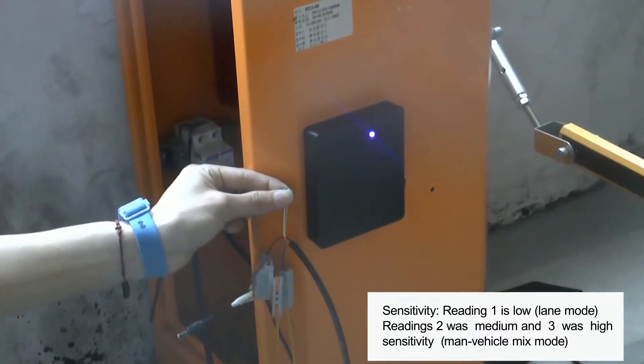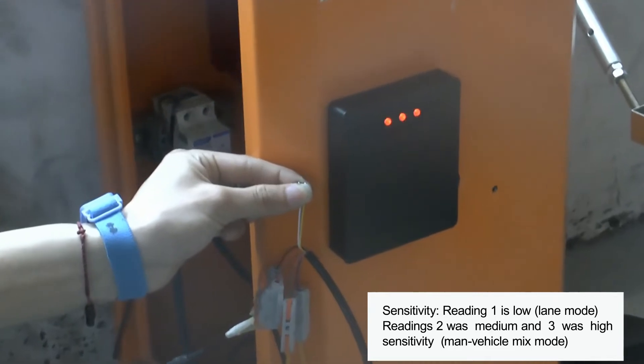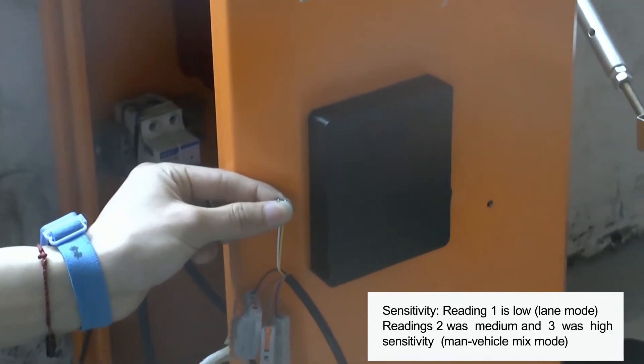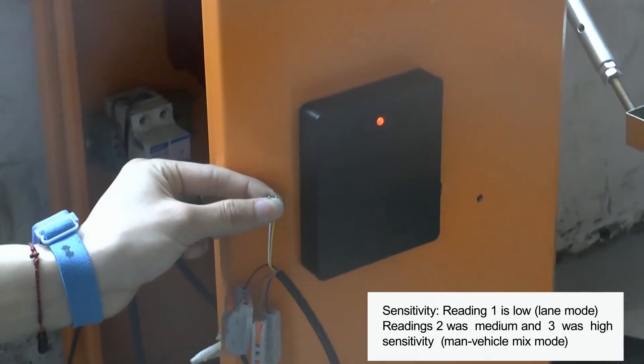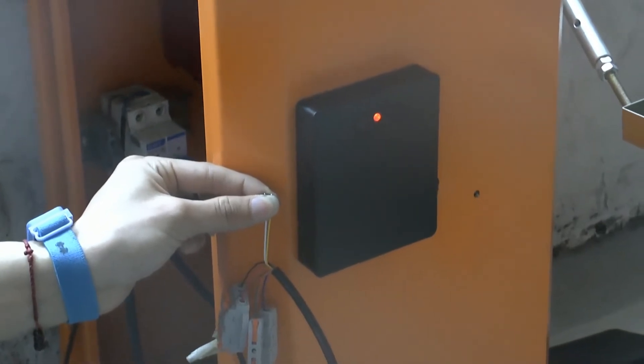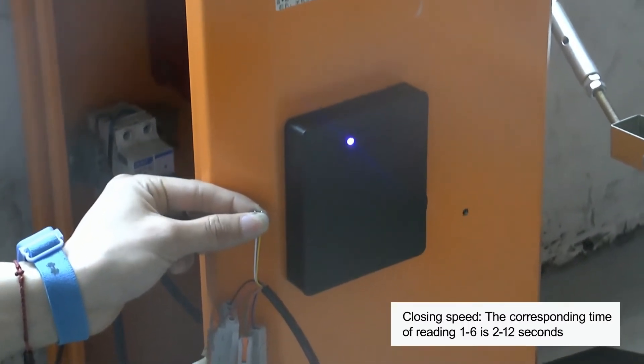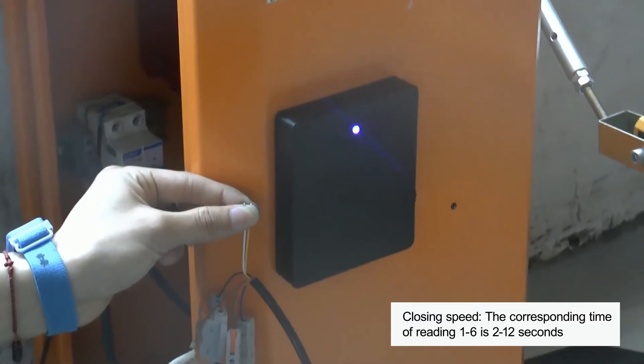The corresponding distance of the radar is 1 to 6 meters. The default detection distance is 3 meters. For the sensitivity, reading 1 is low sensitivity and stands for vehicle mode.